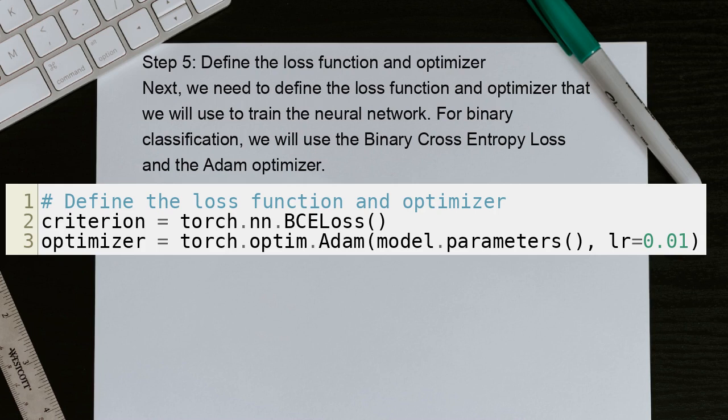Step 5: Define the loss function and optimizer. Next, we need to define the loss function and optimizer that we will use to train the neural network. For binary classification, we will use the Binary Cross Entropy Loss and the Adam optimizer.